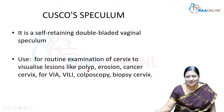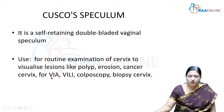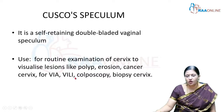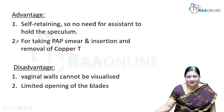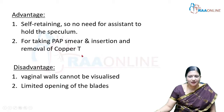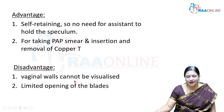Cusco's speculum is used for routine examination of the cervix and to visualize lesions like cervical polyp, cervical erosion, and cancer cervix. It can be used for VIA, VILI, colposcopy, and cervical biopsy, as well as for taking Pap smears and insertion or removal of a copper-T. A disadvantage is that the vaginal walls are hidden behind the blades and the opening of the blades is limited.